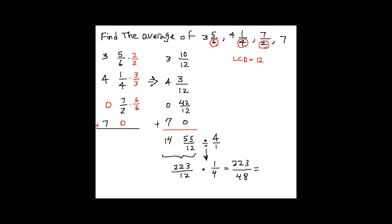In order to change it to the mixed number, we can divide 48 into 223, and then you would get 4 and the remainder of 31. So that would be 4 whole 31 over 48. This would be the average that we were looking for.